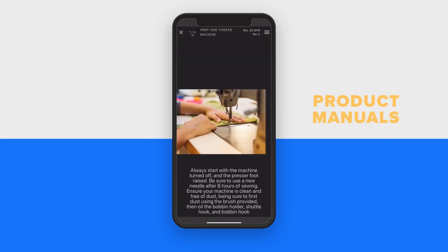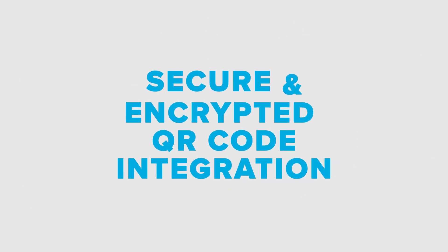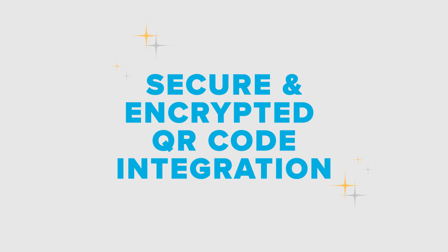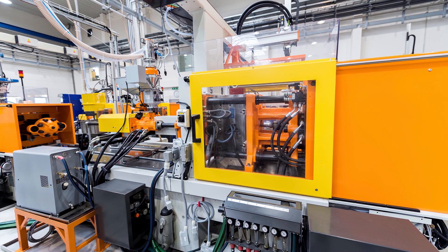Every BPR now comes with secure QR code integration. With QR codes you can attach labels to products or spaces that link back to your secure BPR visual library.